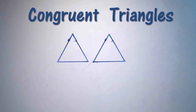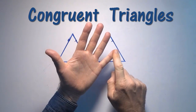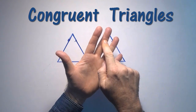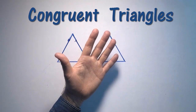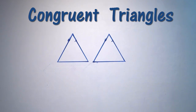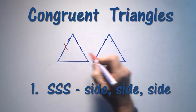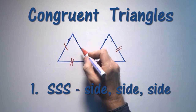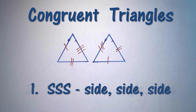I'd like now to do a quick review of congruent triangles. There are five types. The first one is SSS, which stands for side, side, side. That's self-explanatory.